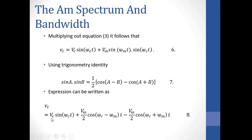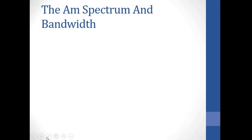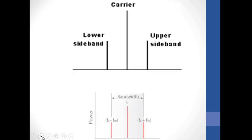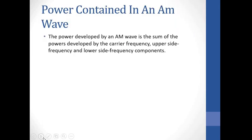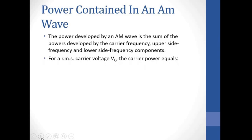For the carrier component, the amplitude is Vc. For the lower side frequency, the amplitude is Vm over 2. For the upper side frequency, the amplitude is also Vm over 2. Moving on to our current slide, in order for us to be able to calculate power, we need these voltage components that we've just mentioned.